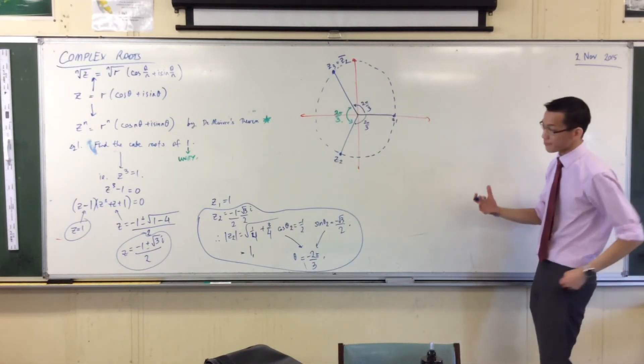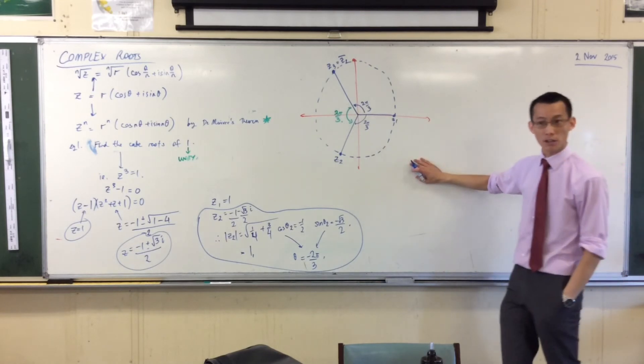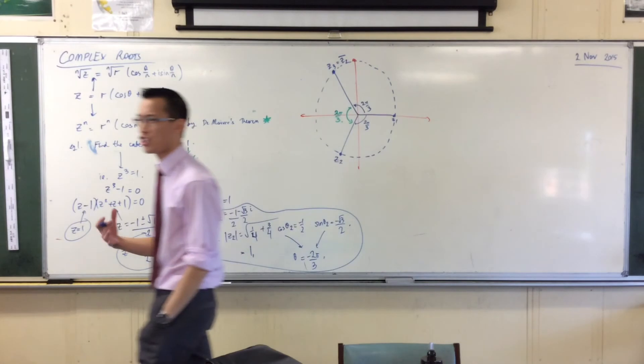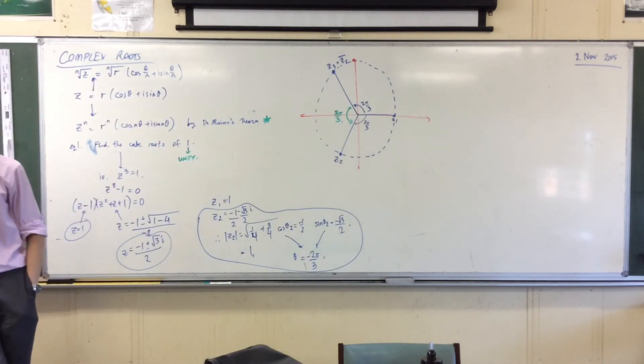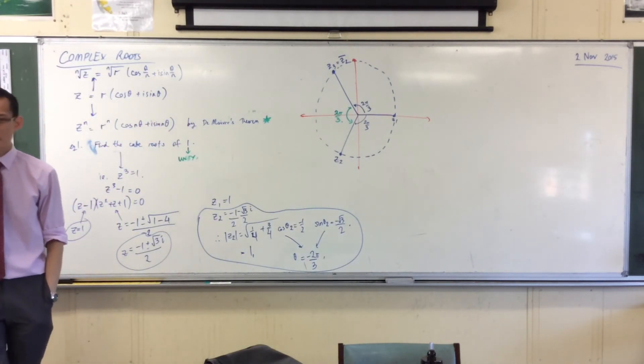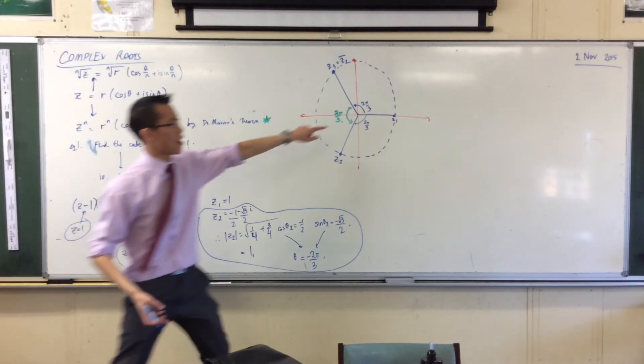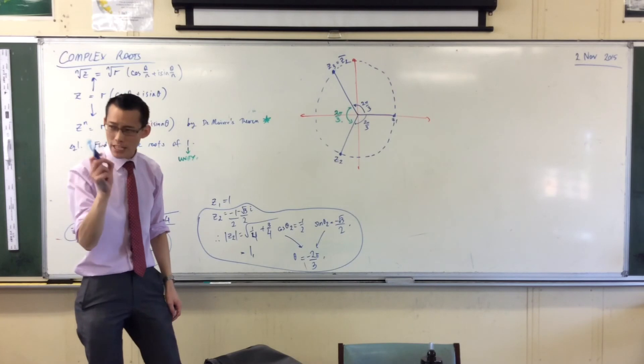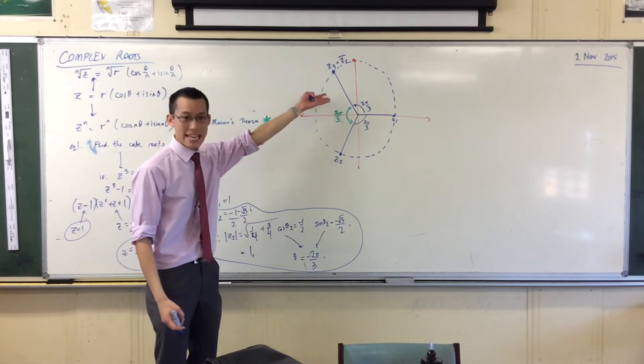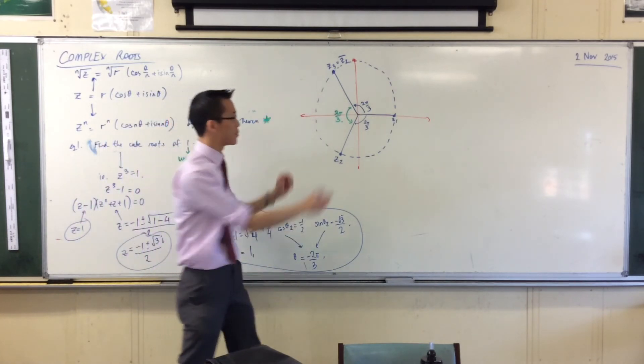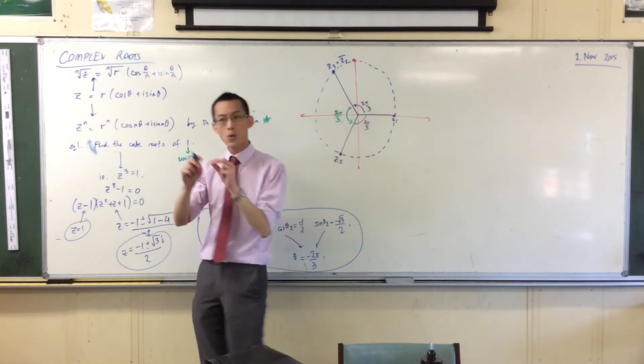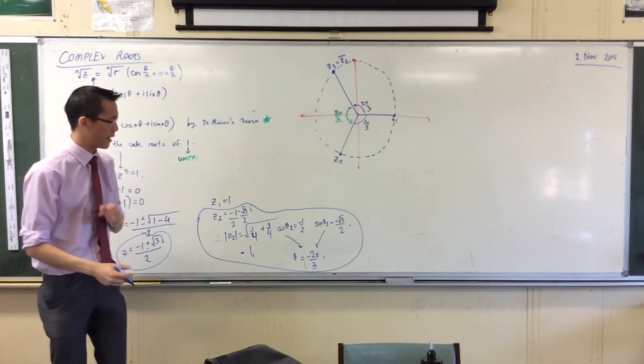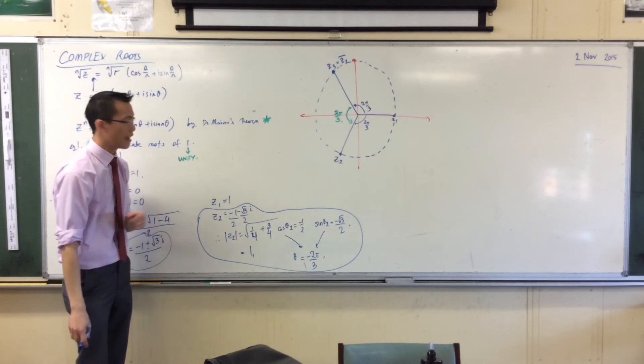You can see all of the roots are on the unit circle. And they're not just anywhere on the unit circle. What's the relationship between the different angles? They're 60 degrees apart, they're equidistant. They're 120 degrees apart, 2 pi on 3 radians apart. More specifically, they're equally spaced out around the circumference of the unit circle. Z1, Z2, and Z3 are equally spaced out.